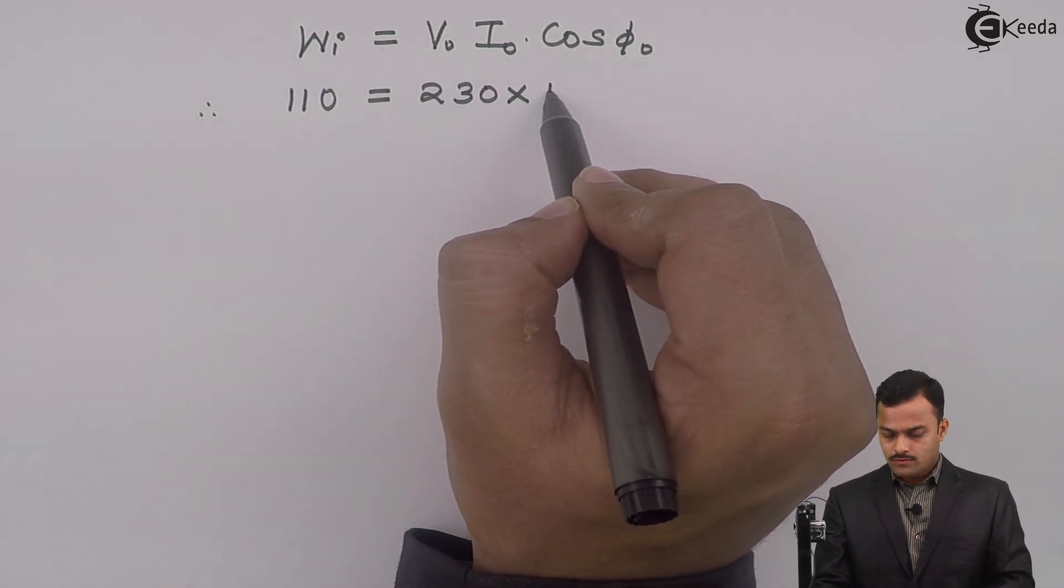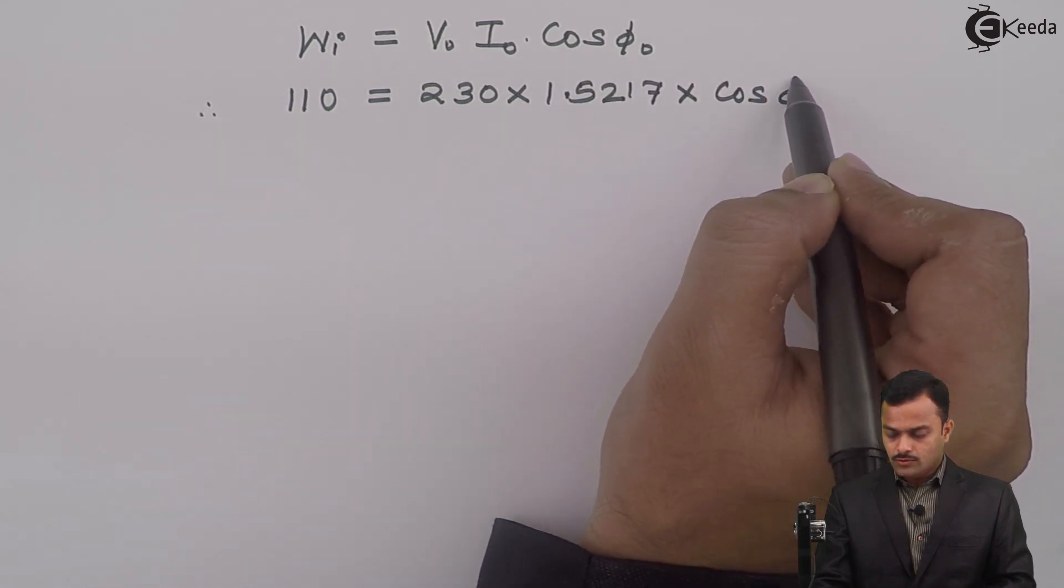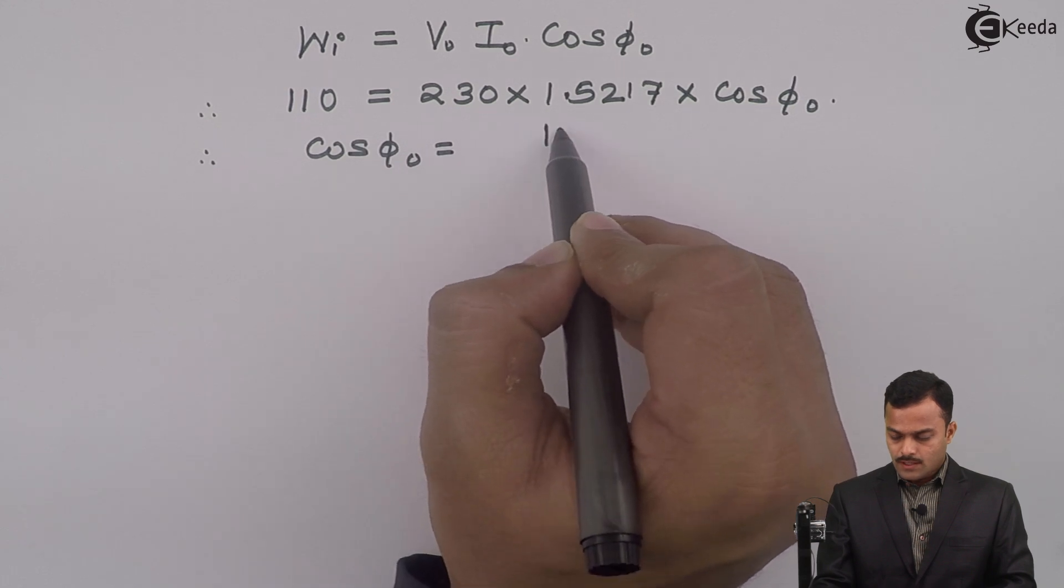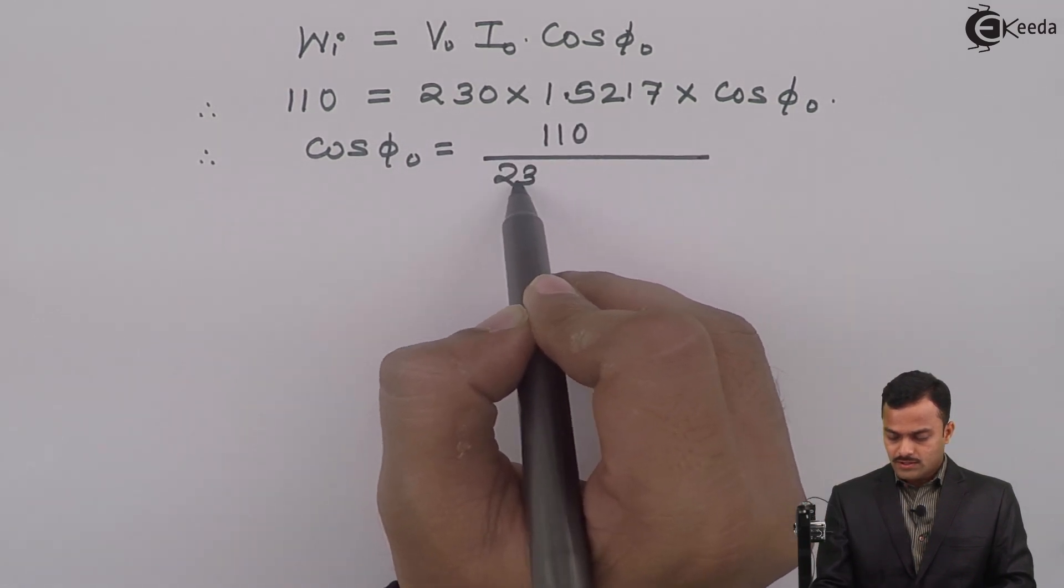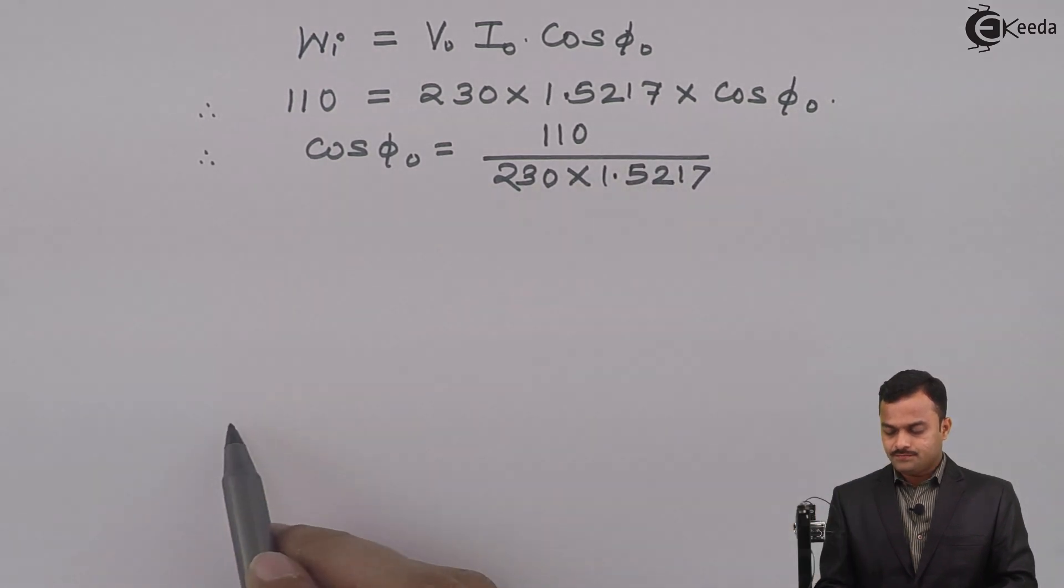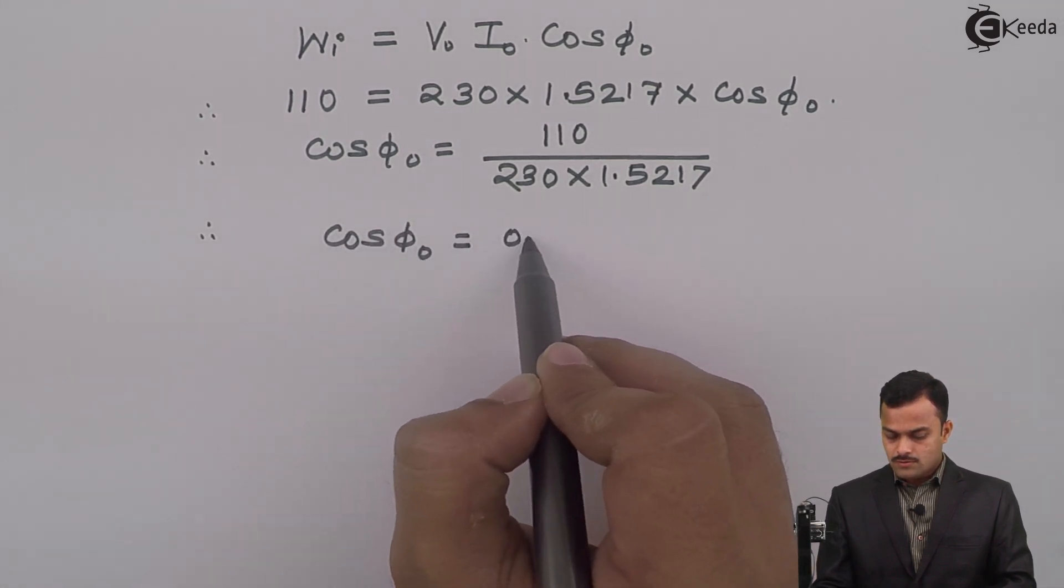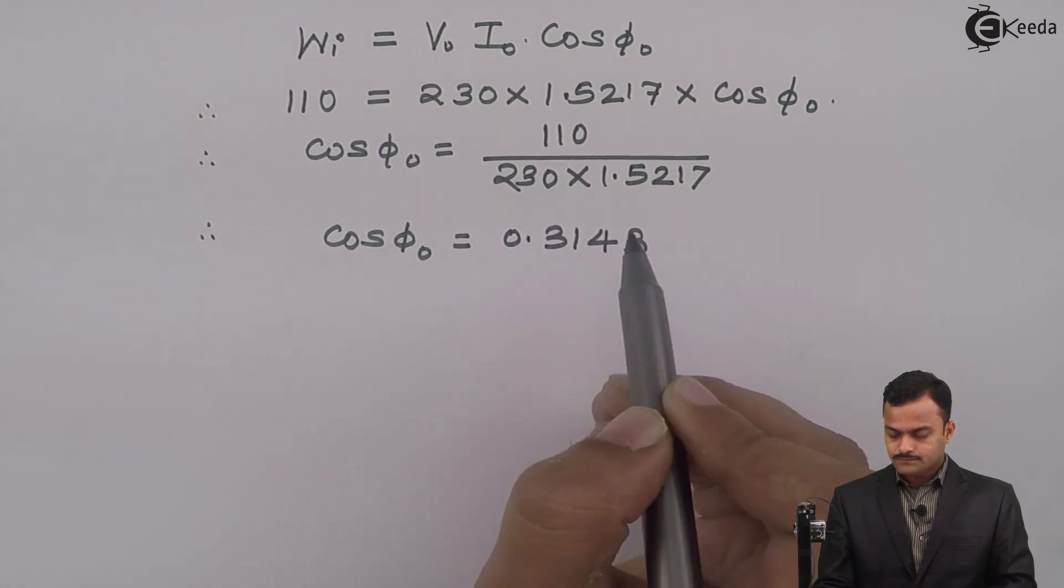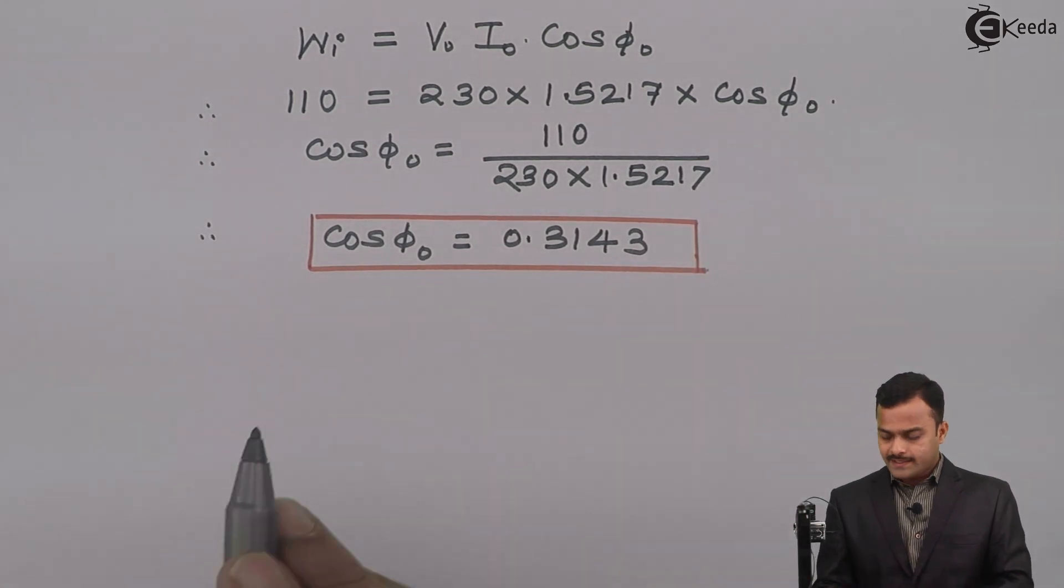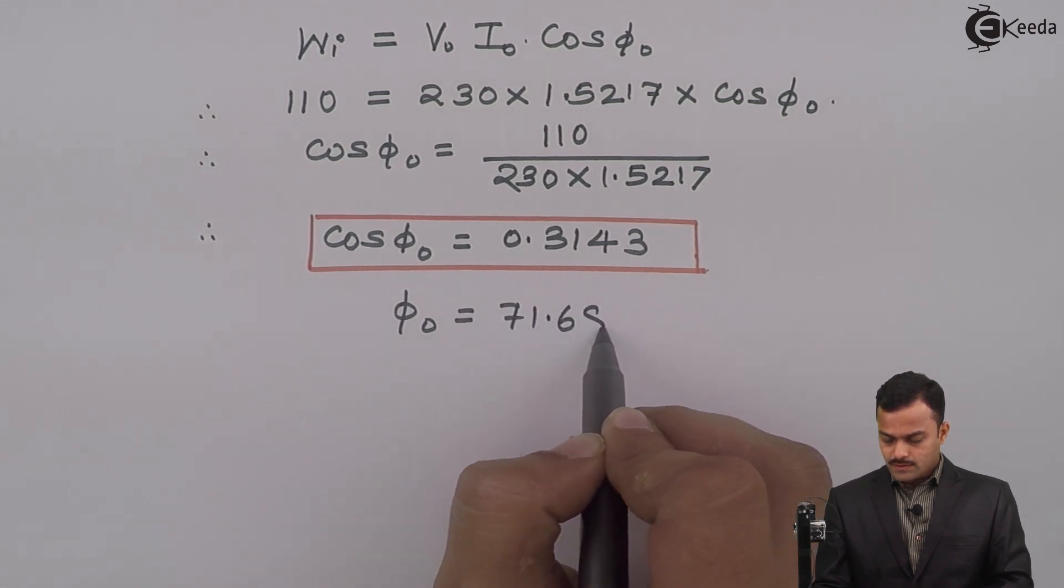Core loss is given 110, V₀ is 230, just now we calculated I₀ = 1.5217, and cos φ₀ is the unknown. So cos φ₀ = 110 / (230 × 1.5217). If you solve you will get no load power factor = 0.3143. From cos φ₀ I can get φ₀, so φ₀ = 71.68 degrees.